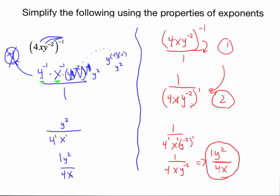Hopefully you notice from these examples that if you're asked to simplify using properties of exponents, there are lots of ways to simplify these problems — not just one way. So keep that in mind. If you see your instructor, a classmate, or somebody else solves it differently than you did, that doesn't mean your way is wrong. There may be a more efficient way, but think about exponents as having multiple valid paths to the simplified expression.